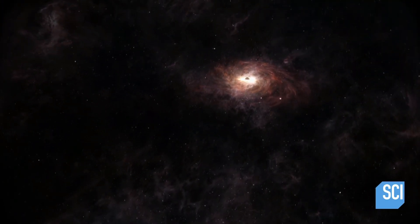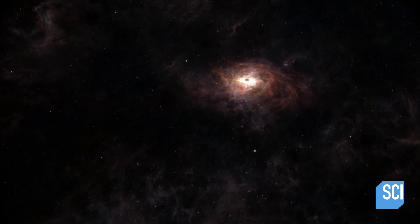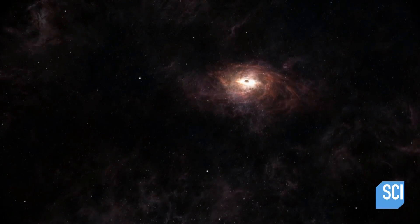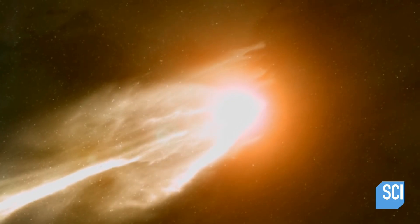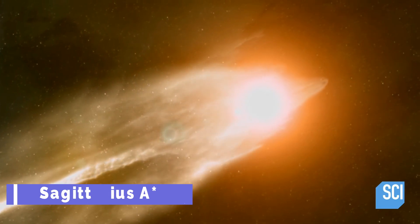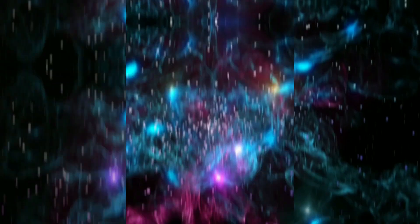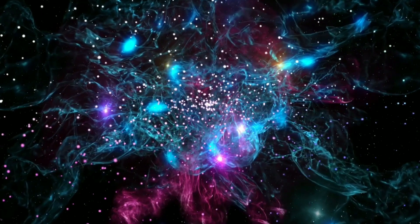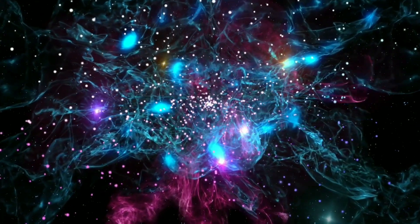In our Milky Way alone, there could be more than 100 million of these enigmatic entities. At the heart of our galaxy sits a supermassive black hole called Sagittarius A*, about 26,000 light years away from Earth. It's an enormous structure with a mass around 4 million times that of the Sun.